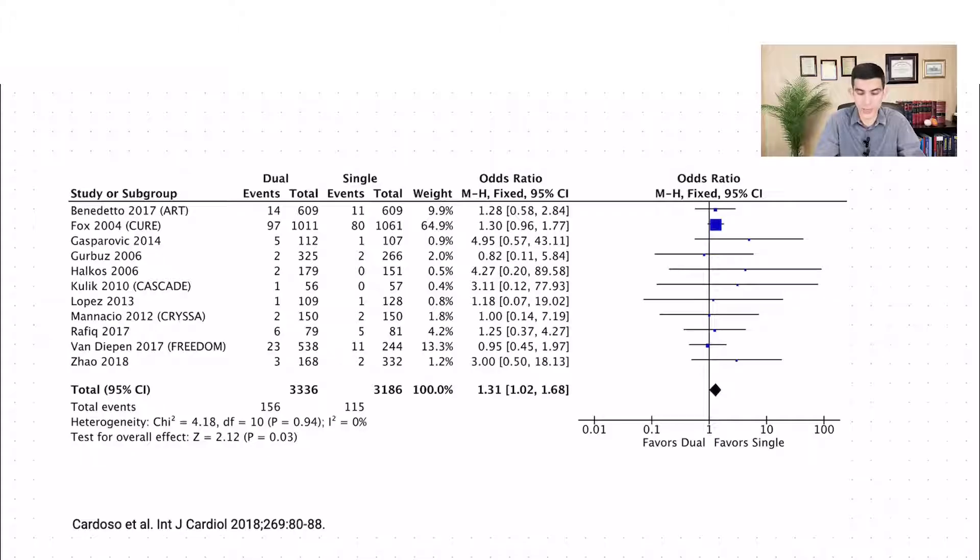wherein each square in the center represents the point estimate of an individual study, and the line represents the confidence interval.